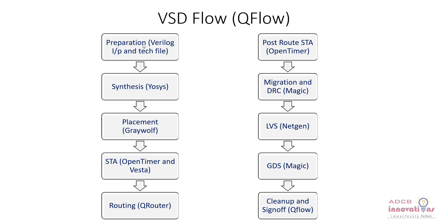In routing we make global routes and detailed routes — there are two types of routing: global routing and detailed routing. All that is done using QRouter. After that we will be doing post-route STA, that is post-route static timing analysis, which is again done using the OpenTimer tool. So now we have placement, static timing analysis, routing, and post-route static timing analysis all done.